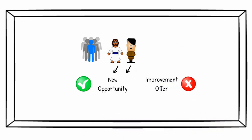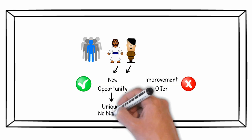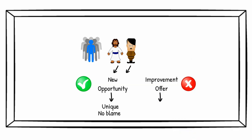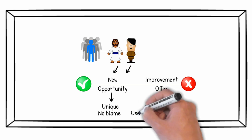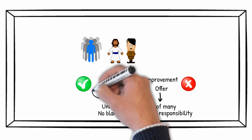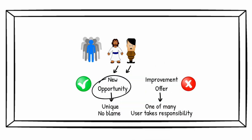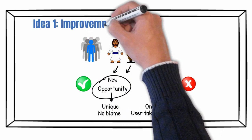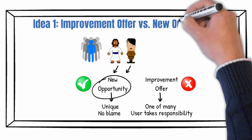A new opportunity is the first and only of its kind with no competition. It offers a fresh start with no need to admit failure. An improvement offer, on the contrary, is usually one out of many similar offers and requires admitting past failures. Russell claims that a new opportunity is what we need if we want to succeed. Idea number one is improvement offer versus new opportunity.